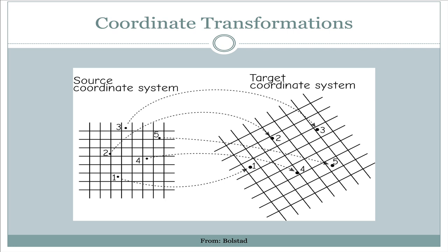When we talk about coordinate transformations, we're talking about moving map data from one coordinate system — shown as a source coordinate system — to a different coordinate system shown as the target coordinate system. We can see that those two don't align; one is at an angle compared to the other, and also the grid is a different size in this case.